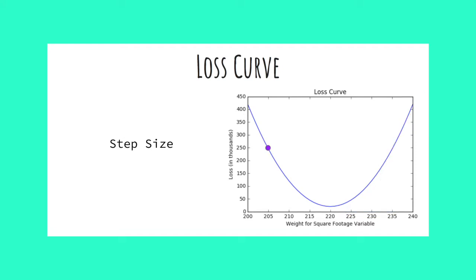But there are two components to gradient descent. First is knowing which direction to move our weight, but second is how much to move our weight. So for example, this purple point represents our current weight. We know based on the slope of the tangent line that we need to increase our weight.